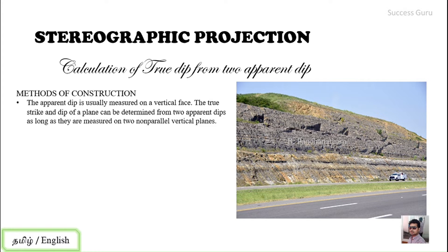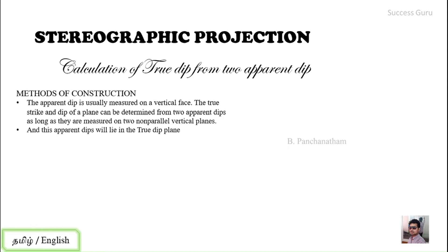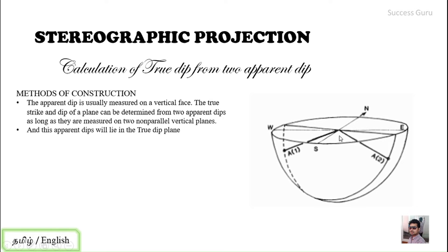Until and unless it is non-parallel vertical planes, we can use those things for our calculations. As you know, this apparent dip will lie in a true plane, right? So when you are measuring in two different directions of a same planar feature on two different vertical planes.